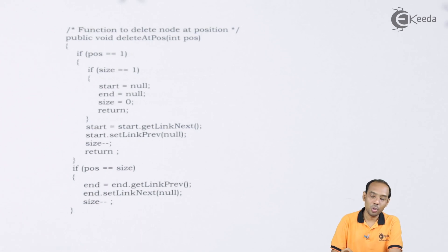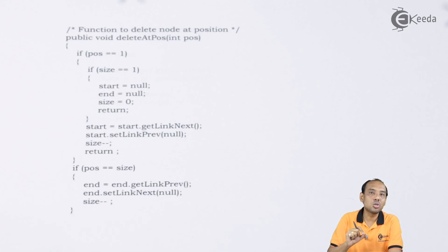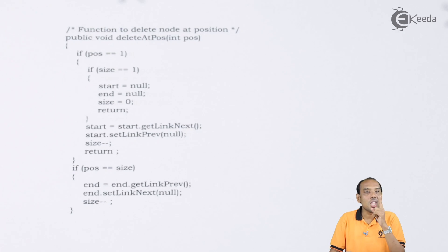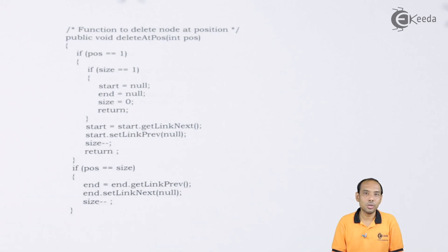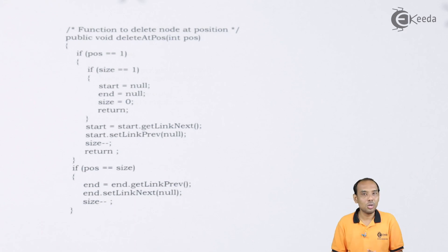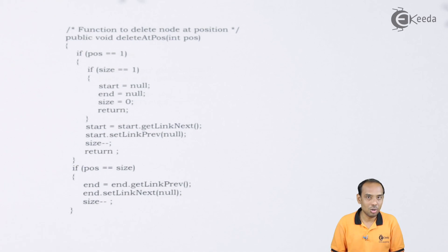Now let's take a condition: user wants to delete the node at position number one. If position equals one, it means our size is also going to be one. We check if size equals one — it means there is only one node present in the linked list and that particular node is to be deleted. So position equals one and size equals one means we need to set start and end again equal to none.